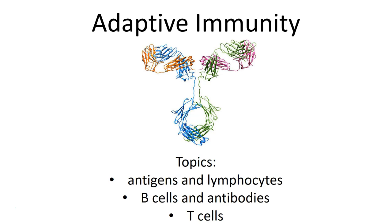As we talk about B cells, we'll talk about their most important secretion or component — those are antibodies. We'll spend the remainder of our lecture talking about T cells specifically. What we see here, this beautiful ribbon diagram, is an IgG, an immunoglobulin, more commonly known as an antibody. Antibodies play a huge role in the adaptive immunity response.